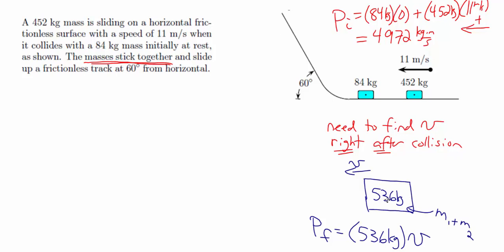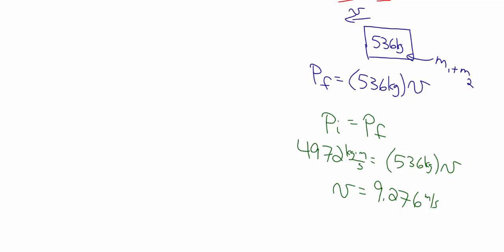They stick together, so the total mass M1 plus M2 is 452 plus 84, or 536 kilograms. The final momentum, right after they stick together, is that total mass — 536 kilograms — times the unknown velocity V. Because momentum is conserved in all collisions, the initial momentum of 4,972 kilogram meters per second equals the final momentum, 536 kilograms times V. This gives a speed of 9.276 meters per second right after they stick together.